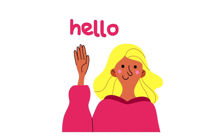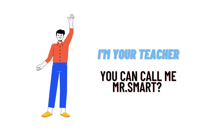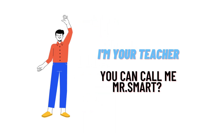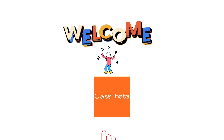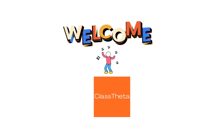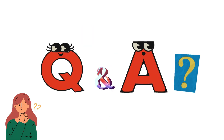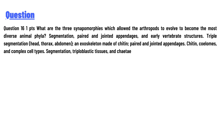Hello everyone, how are you? I am Akrash, your teacher here, and I will teach you different questions and their answers. I welcome you on class twitter.com. Our today's question is Question 16, one point: What are the three synapomorphies which allowed the arthropods to evolve to become the most diverse animal phyla?